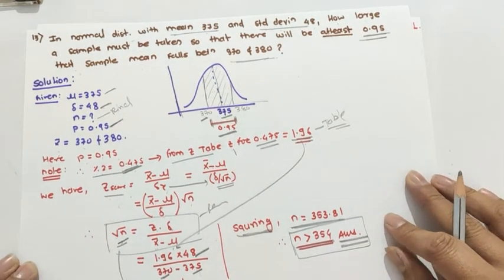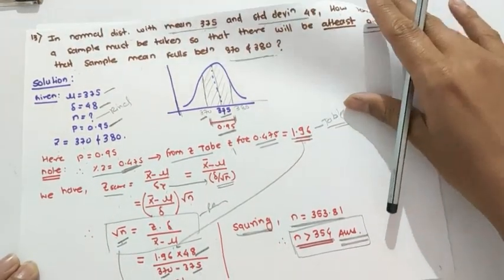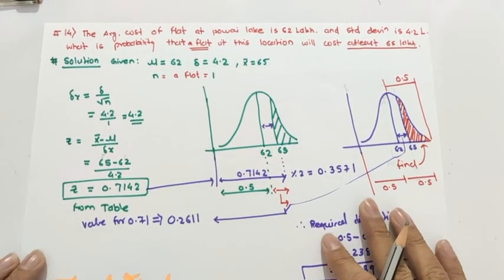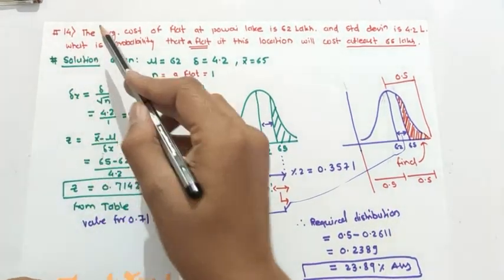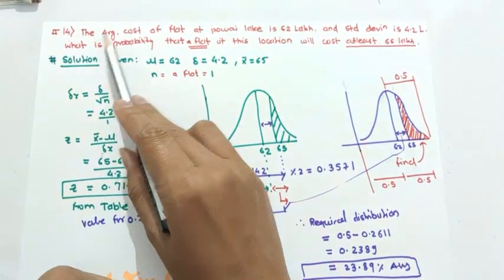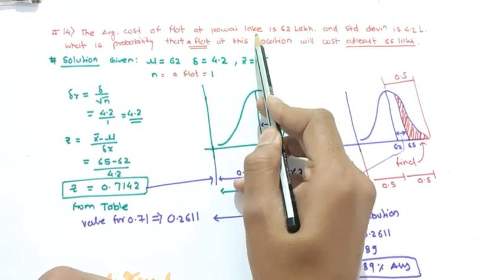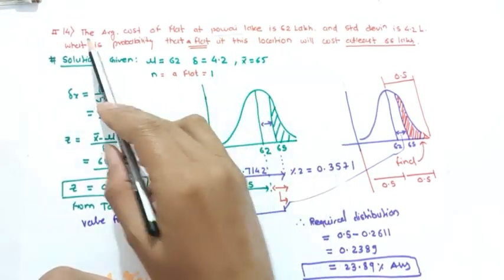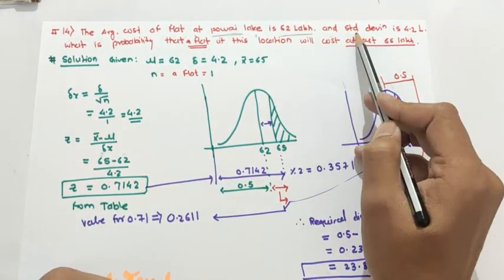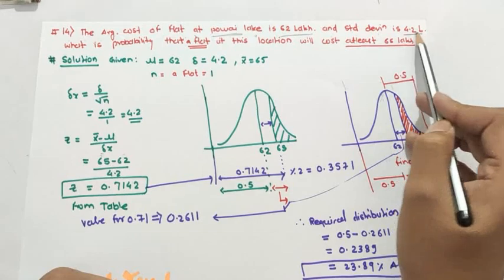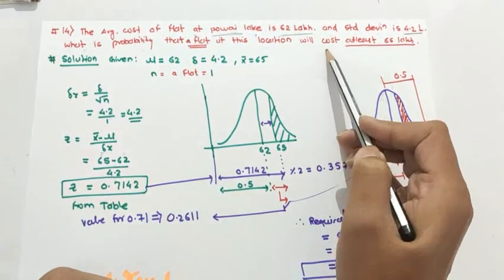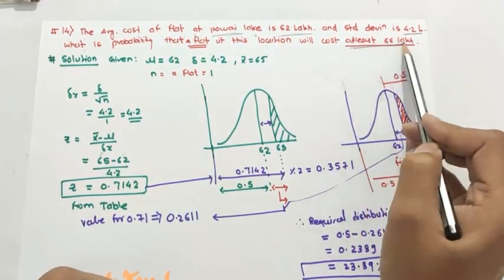In this type of problem you use reverse z. Now the 14th example — a practical example: the average cost of a flat at Powai Lake in Mumbai is 62 lakh and the standard deviation is 4.2 lakh. What is the probability that a flat at this location will cost at least 65 lakh?